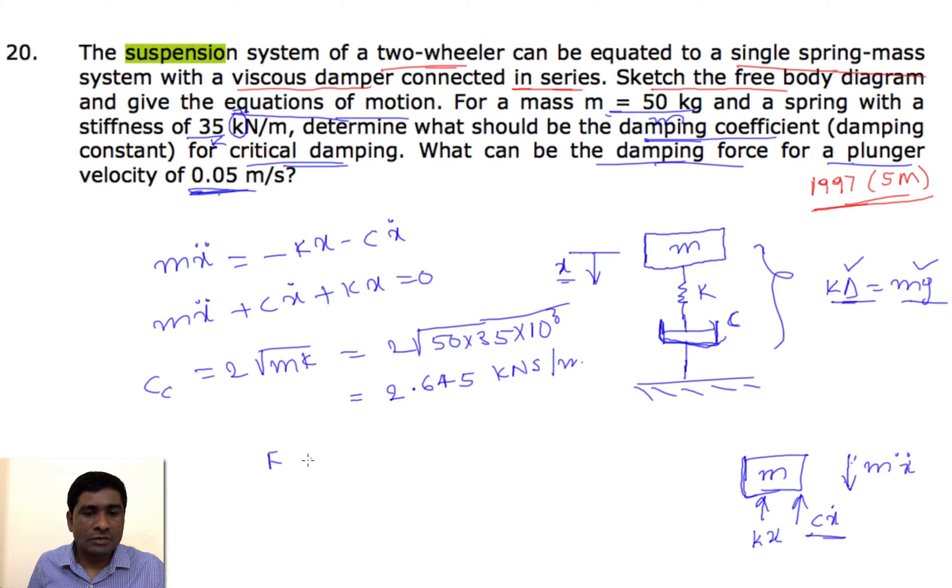That is f equals c into x dot. So x dot is given and c we need to find out. But he has given at this instant where the c becomes c_c, or when we consider c as the critical damping coefficient. So in that case we can directly substitute this value. So this is 2.645 into 0.05, so after simplification we will get 132.29 Newton.